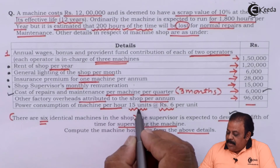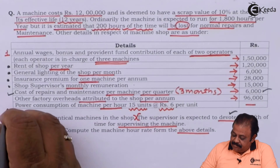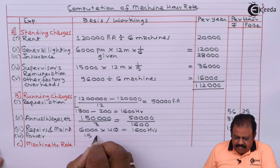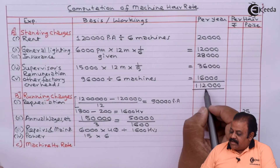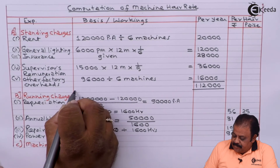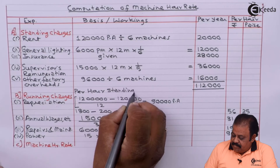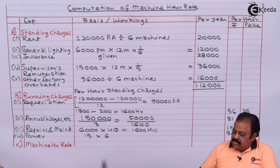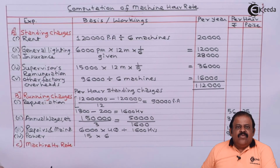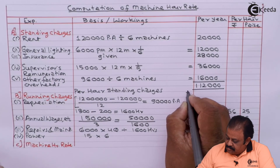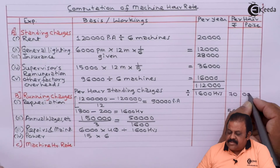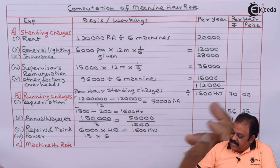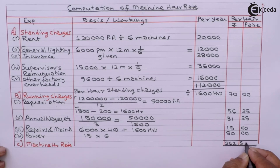Power consumption is 15 units per hour at Rs. 6 per unit, giving Rs. 90 per hour. Total standing charges are Rs. 1,12,000, divided by 1600 working hours, giving Rs. 70 per hour. Adding all charges together, the machine hour rate comes to Rs. 262.50.